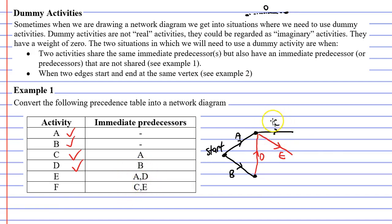it doesn't help us with activity C. We've changed the predecessors for activity C now. Its immediate predecessors are now A and D. And when we look at our precedence table, activity C should only have one immediate predecessor, A. So how do we get around this?